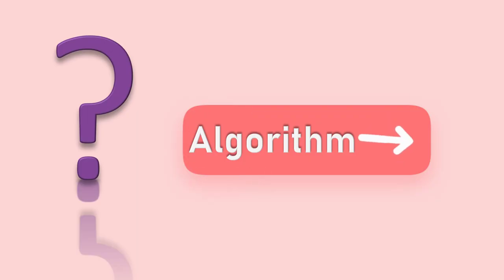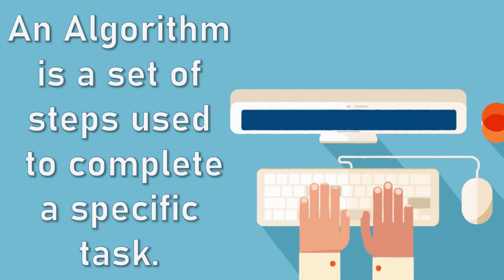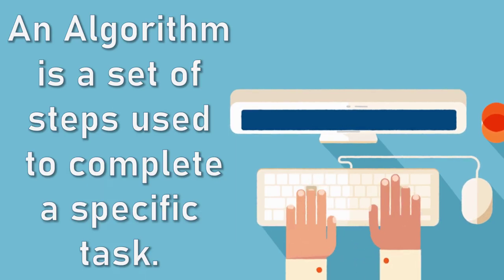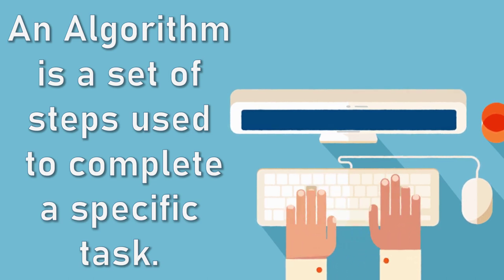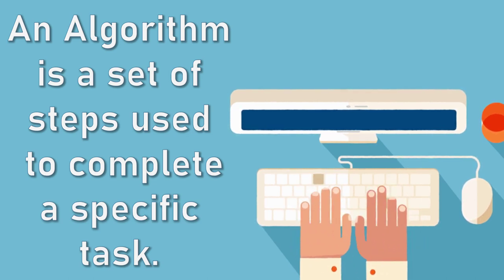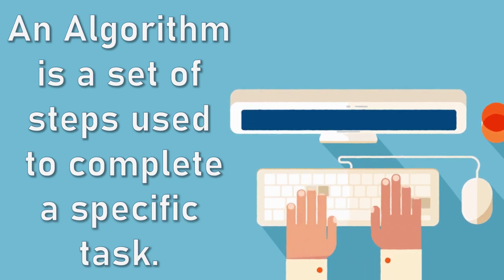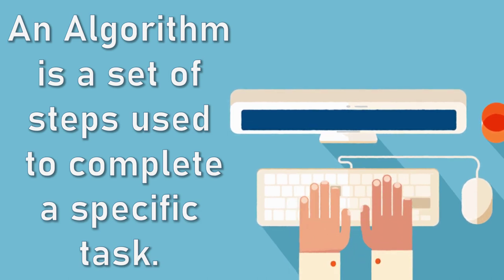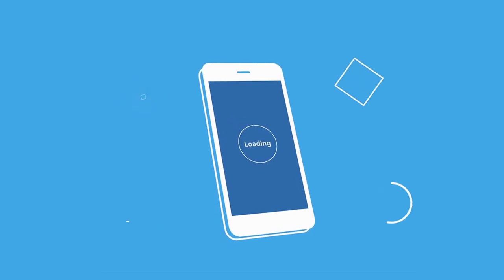Let's start with the word algorithm. Have you heard the word algorithm? What exactly does it mean? Simply, an algorithm is a set of steps used to finish a specific task. We can call the algorithm the building blocks or the base for programming.